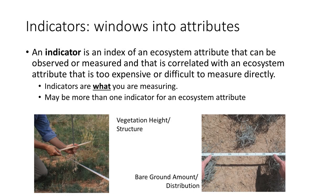An indicator is something that can be observed or measured that is correlated with an ecosystem attribute or process that's too difficult, inconvenient, or expensive to measure directly. Sometimes direct measurements are impossible; other times it's simply too expensive. For example, the amount of bare ground on a plot and its arrangement can be an indicator of the potential for soil erosion and soil nutrient loss, decreased water infiltration, and species invasion—all things that are difficult to measure directly.